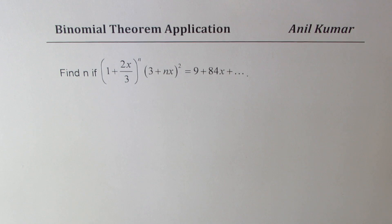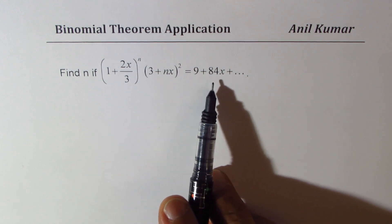The question here is find n if (1 + 2x/3)^n times (3 + nx)^2 equals 9 + 84x and so on.